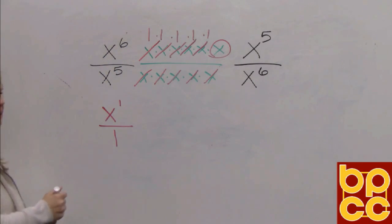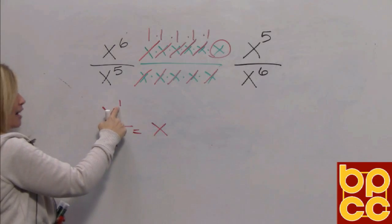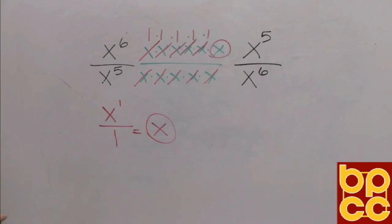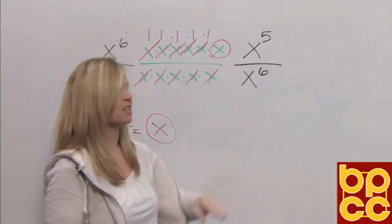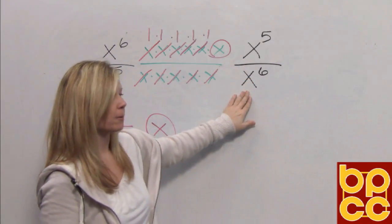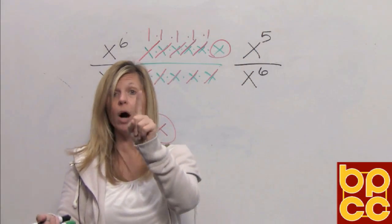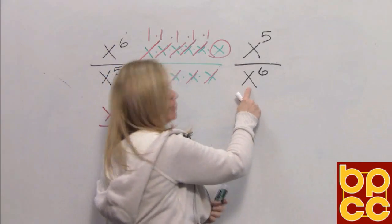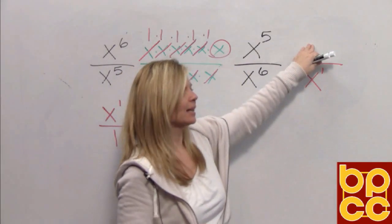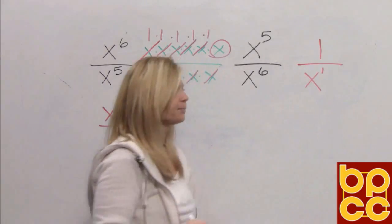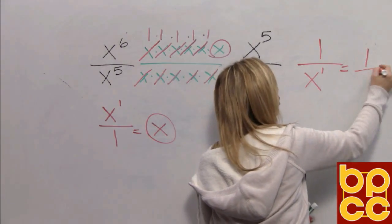But is that an acceptable answer? No, it's not. We don't write a denominator of 1, and we also do not write an x exponent of 1. So that would simply be x. Now if we look at x to the fifth divided by x to the sixth, we subtract exponents: 6 and 5 give 1, but that x to the first power goes in the bottom because that's where there are more x's. If you put it in the denominator, the numerator is understood to be the number 1. We do not write an x exponent of 1, so this is just 1 over x.